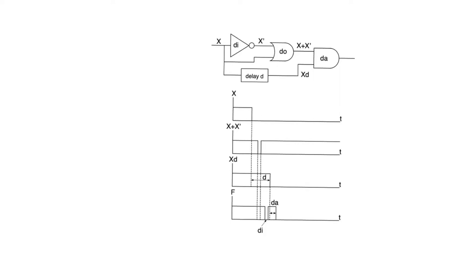A dynamic 1-to-0 hazard happens when a signal makes a transition from 1 to 0, but while making that transition, it glitches back to 1 first before settling on 0. A dynamic 0-to-1 hazard is one that appears when we make a transition from 0 to 1, and the glitch appears by dropping back to 0 for a limited period of time before settling on the final value of 1.